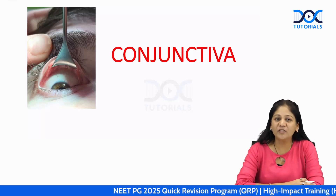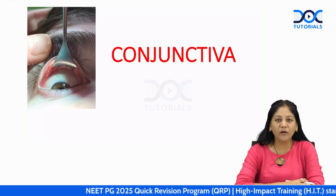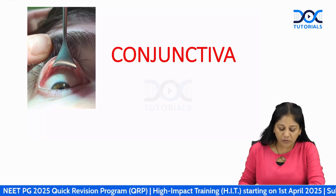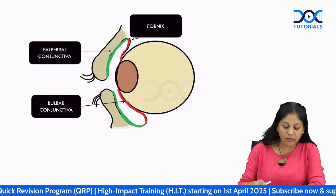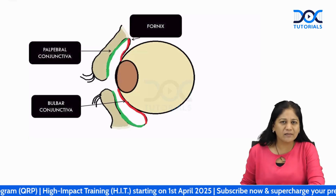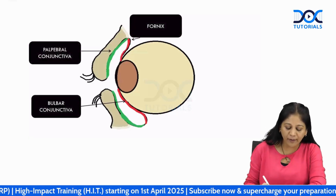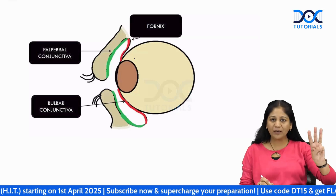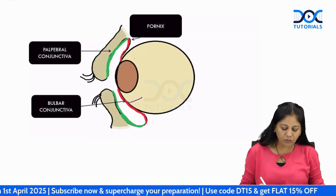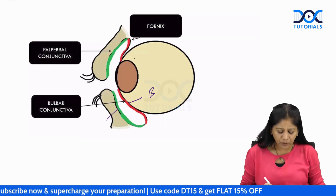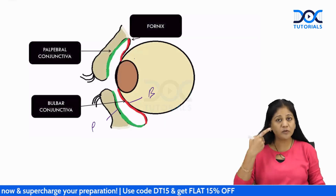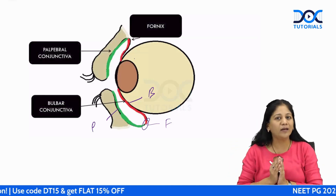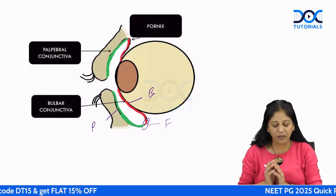Let's have a quick revision on important topics related to conjunctiva. Conjunctiva joins the eyeball with the eyelid. We have three parts: the bulbar, which is on the sclera; the palpebral, which is behind the eyelid; and the fornix, which joins the two.